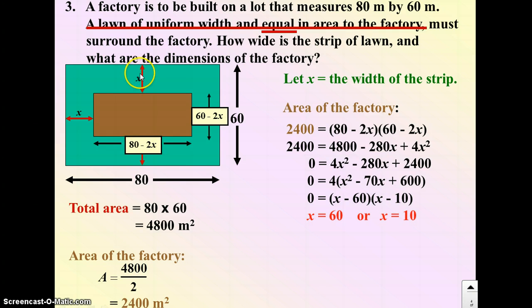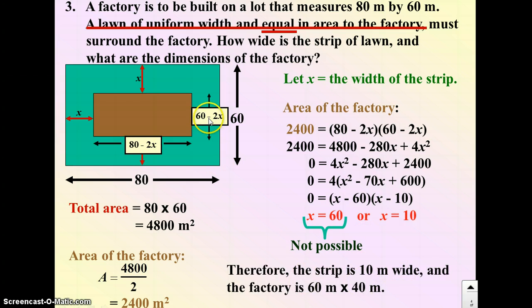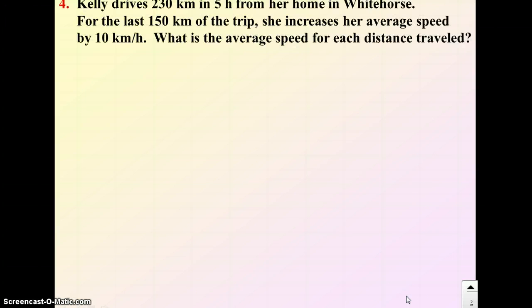If my width of the lawn x is 60 meters, well, the whole width of the lot that it's built on is 60 meters, so it wouldn't make sense to have a strip of lawn that's 60 meters on all sides. It doesn't make sense, right? So this one's not possible. x must be 10, and that's what we were asked to find. How wide is a strip of lawn? And finally, what dimensions of the factory? So the factory should be 60 minus 2 times 10 by 80 minus 2 times 10. So 60 minus 2 times 10 is 40, and 80 minus 20 is 60.